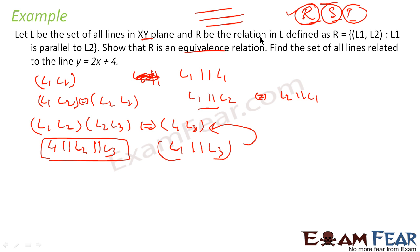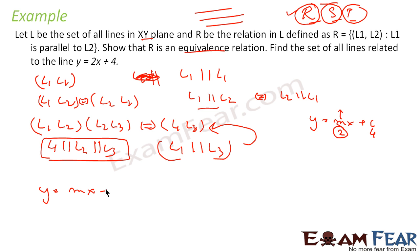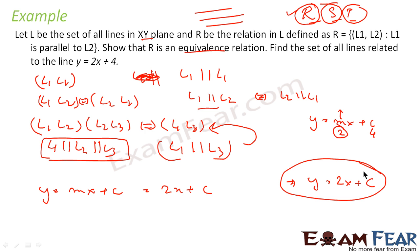The question also asks us to find the set of all lines related to y = 2x + 4. In the equation y = mx + c, m is the slope. Here m is 2 and c is 4. To find the general equation of a line parallel to this, we only need the slope, which is 2. So the general equation is y = 2x + c, where c is any constant. Any line in this format is parallel to the given line.